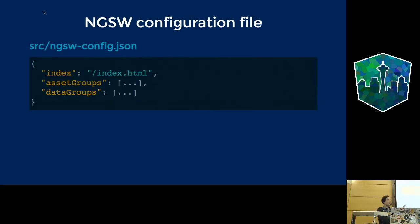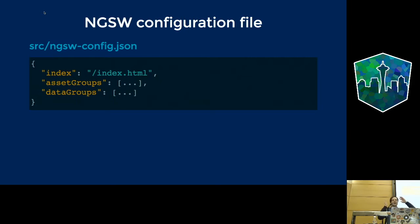The third category would be API lookups — those are probably the best candidates for data groups, unless they are too dynamic. All API requests go to this group. For example, you wouldn't want to cache an entire catalog API from items 1 to 1000 — that's not part of the application shell. That part goes into data groups rather than asset groups.